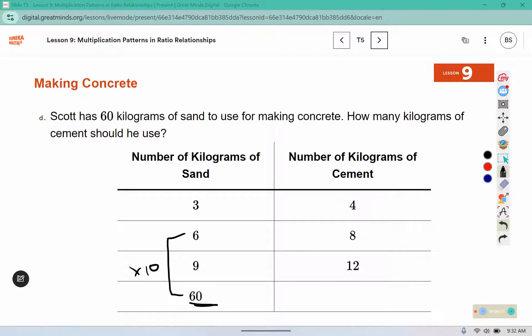Now I need to use the same rows to create the next piece. So I still need to use the 8 to tell me about this blank section here. And I keep multiplying by the same number. And 8 times 10 would be 80. So how many kilograms of cement should he use? 80 kilograms.